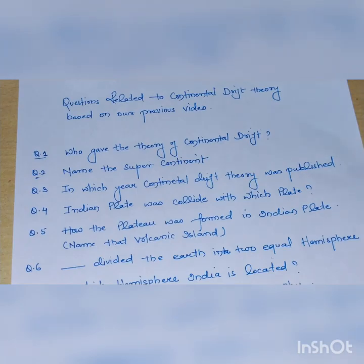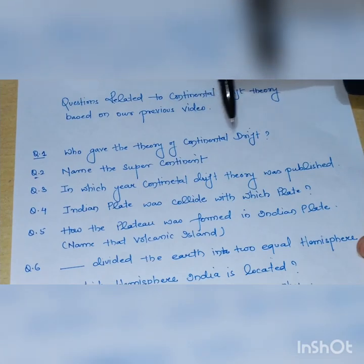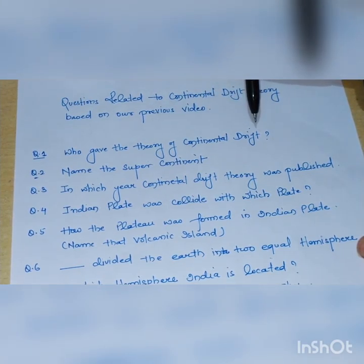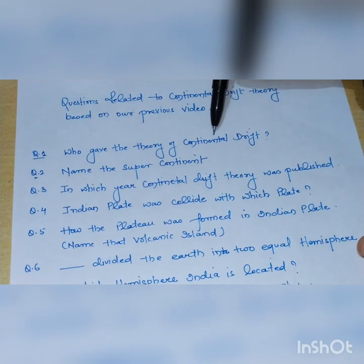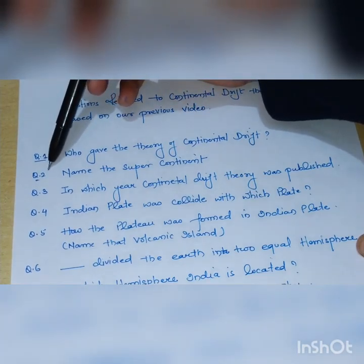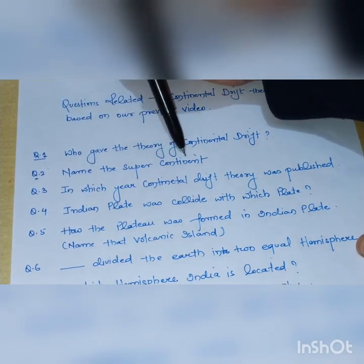First question: who gave the theory of continental drift? Answer is Alfred Wegener. Next question: name the supercontinent. Answer is Pangaea.